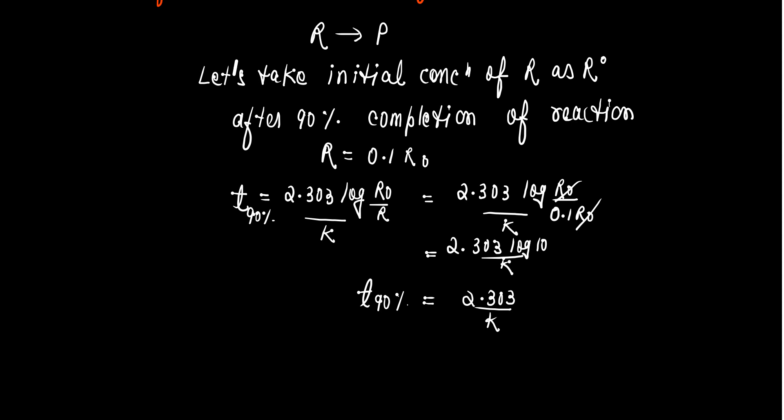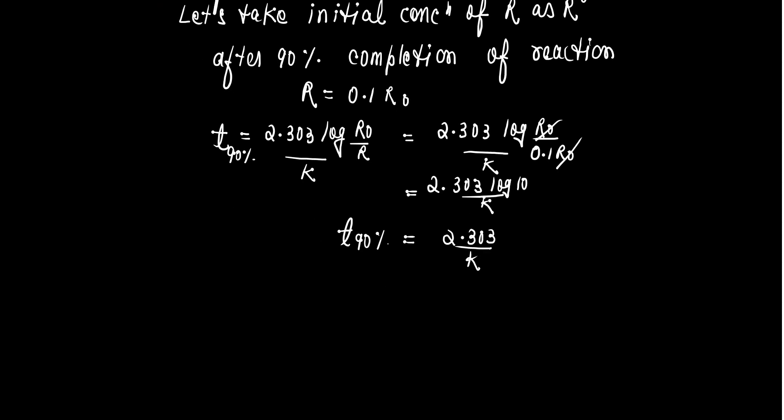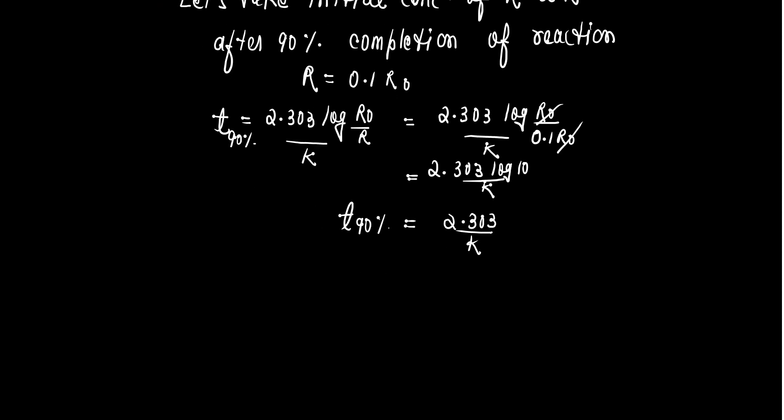For the half life, we already have an expression for first order reaction. T 50% or T half is equal to 0.693 upon K. This is the half life of first order reaction.